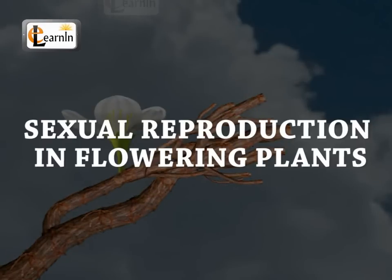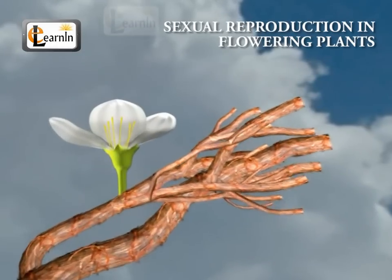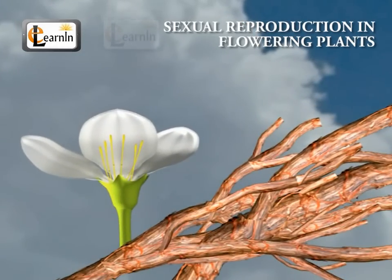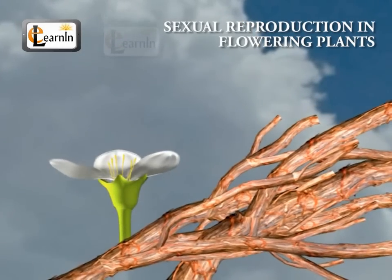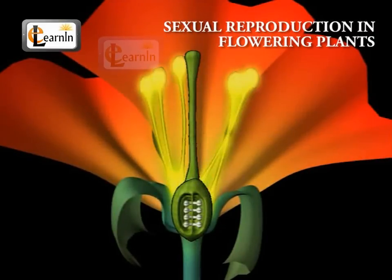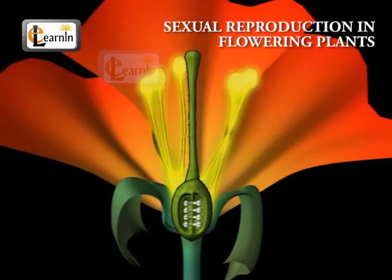In this video, we will understand sexual reproduction in flowering plants. The reproductive organs of angiosperms are located in the flower.